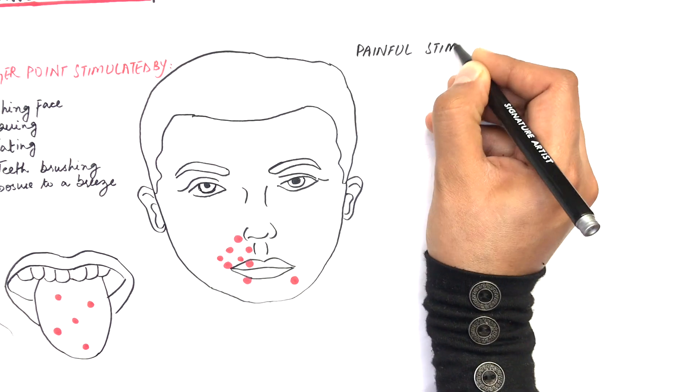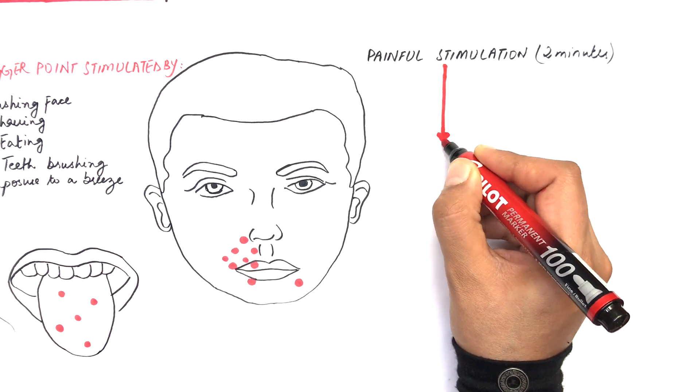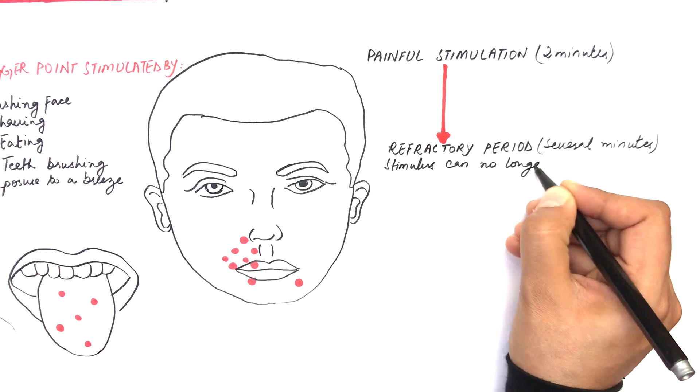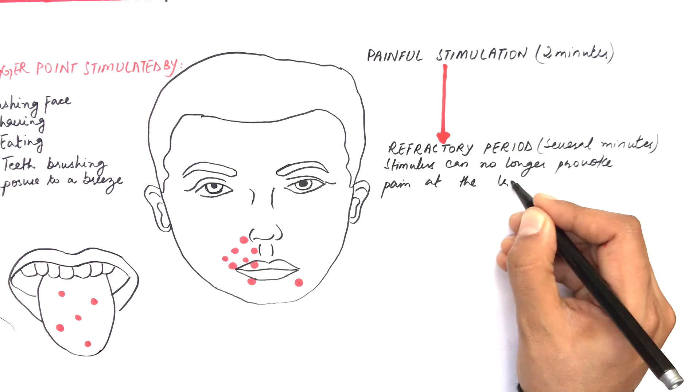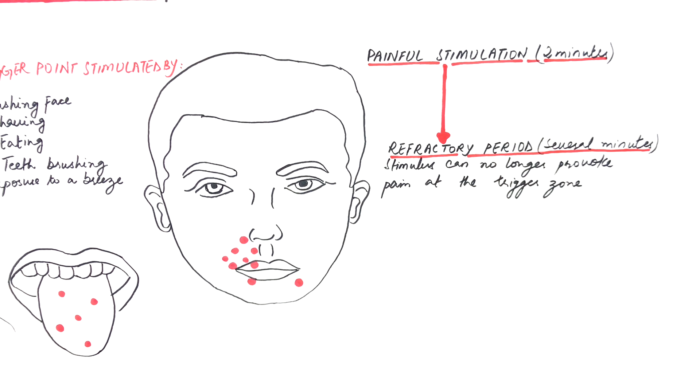Each painful stimulation lasts no longer than two minutes, followed by a refractory period where the stimulus can no longer provoke pain at the trigger zone. This refractory period is clinically useful in distinguishing trigeminal neuralgia from stimulus-provoked odontogenic pain.